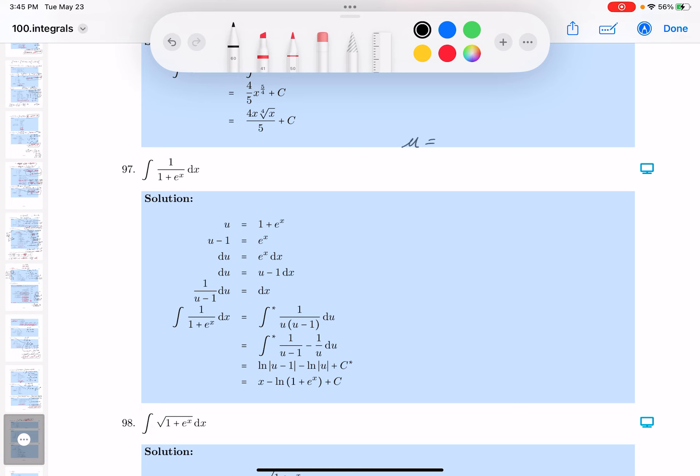Maybe a u substitution would work out. Let me write that down for u equals 1 plus e to the x. du would be e to the x dx. Let's see if we can write that down, see if it gets any easier. And what are you going to get? You can get 1 over u. That's relatively simple.